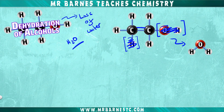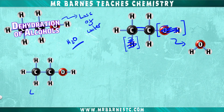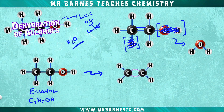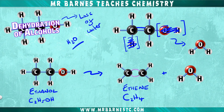If we look at how to draw and write this, we always start off with the alcohol in the question — in this case ethanol, C₂H₅OH. The next thing we do is put our alkene in. We have taken away two hydrogens and one oxygen, so that leaves us with C₂H₄, ethene, as you can see here. Finally we're left with water because we've taken it away, so we put H₂O.